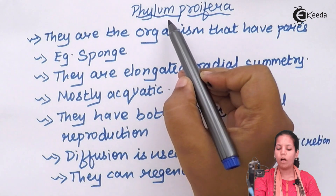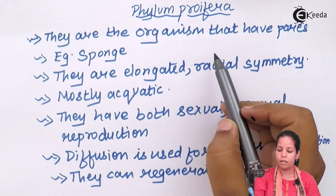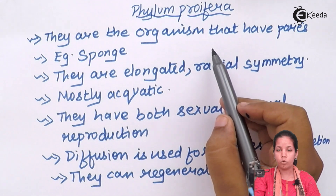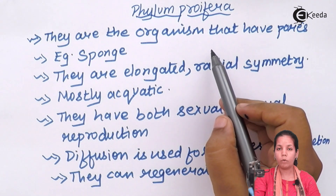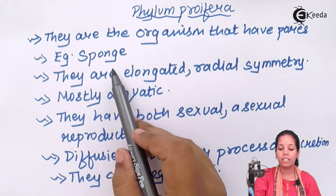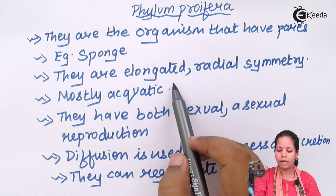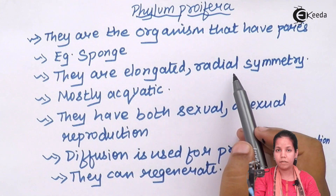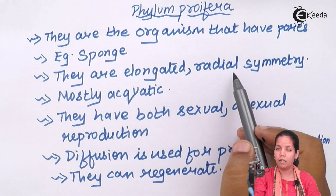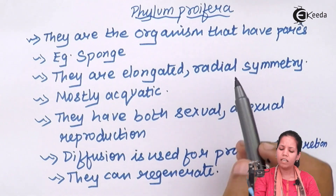The organisms in Phylum Porifera have pores in them, and one of the classic examples is sponges. They are elongated and have radial symmetry — radial because the axis is in the center.